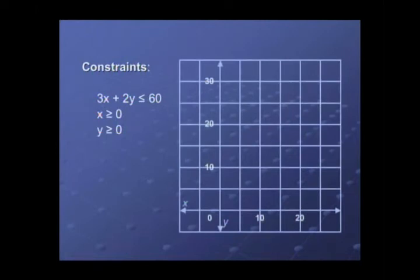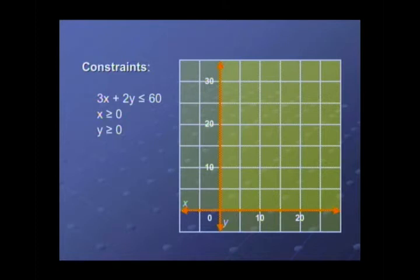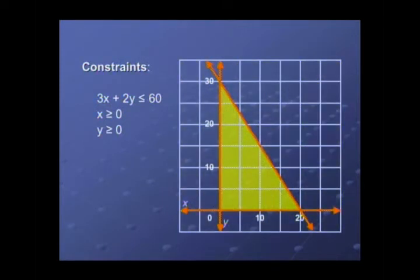The teacher asks if anyone would like to graph this system. A student volunteers and explains the graph if X is greater than or equal to zero, and here is the graph if Y is greater than or equal to zero. For 3X plus 2Y is less than or equal to 60, we first let 3X plus 2Y equal to 60 be the line that will define the inequality. If X equals zero, Y equals 30. If Y equals zero, X equals 20. If we let the origin be a test point, the region is below the line. Thus, the intersection of all these half planes is this.